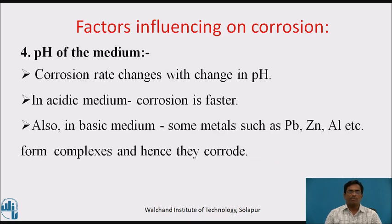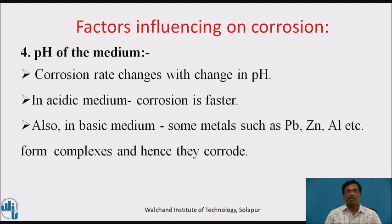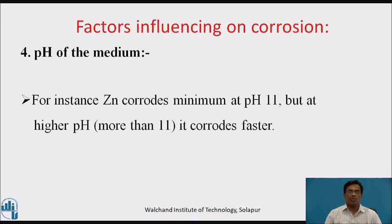Fourth, pH of the medium — rate of corrosion changes with change in pH. Naturally, in an acidic medium the rate of corrosion is faster. Also, in a basic medium, some metals such as lead, zinc, aluminium, etc. form complexes and hence corrode. For instance, zinc corrodes minimum at pH 11, but at higher pH above 11, it corrodes faster.